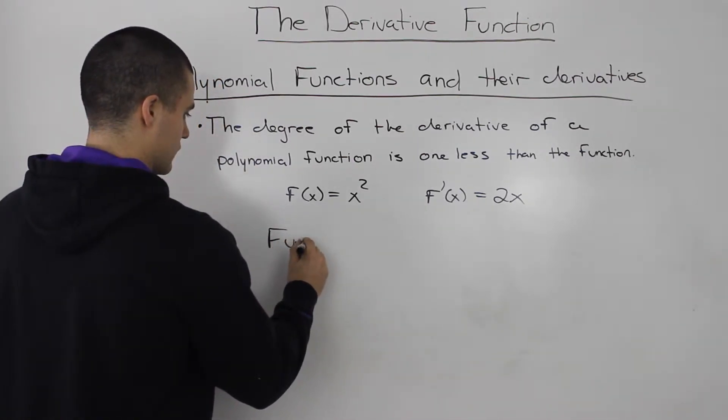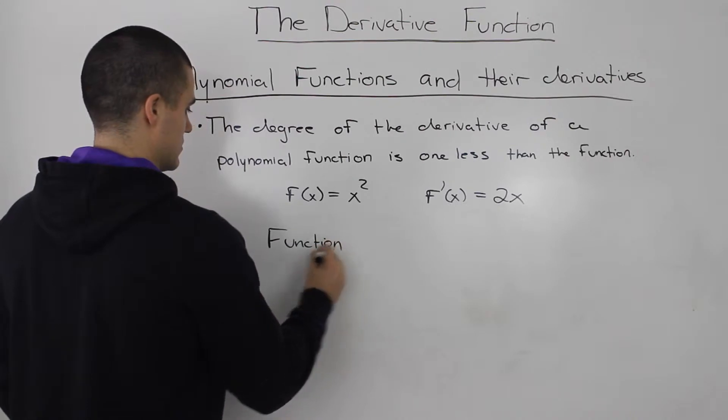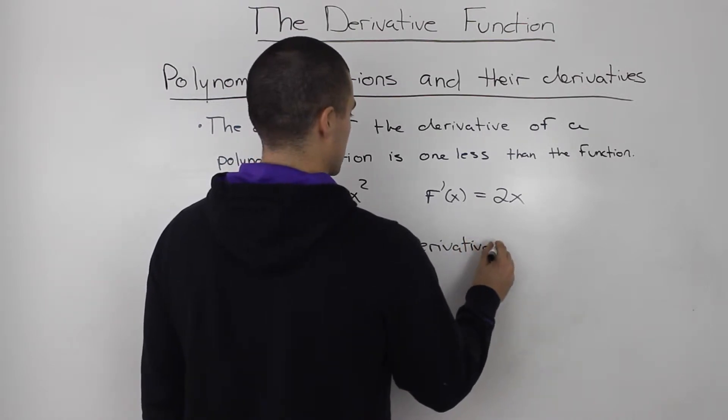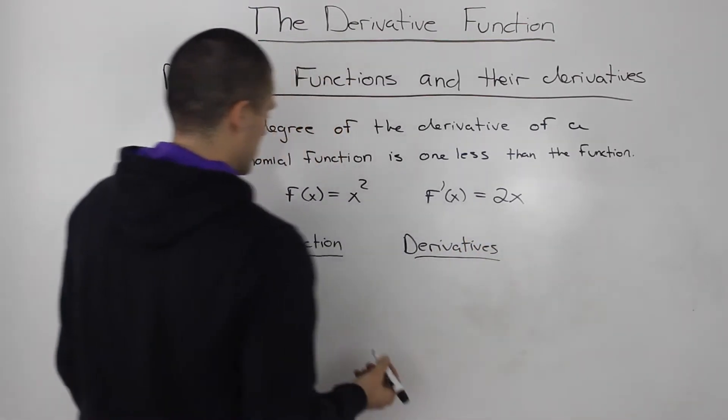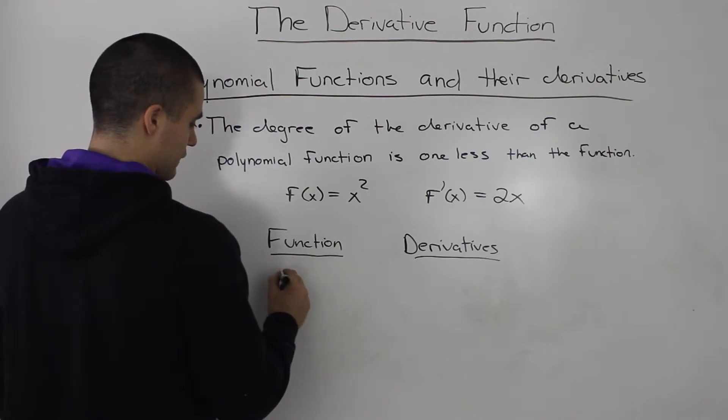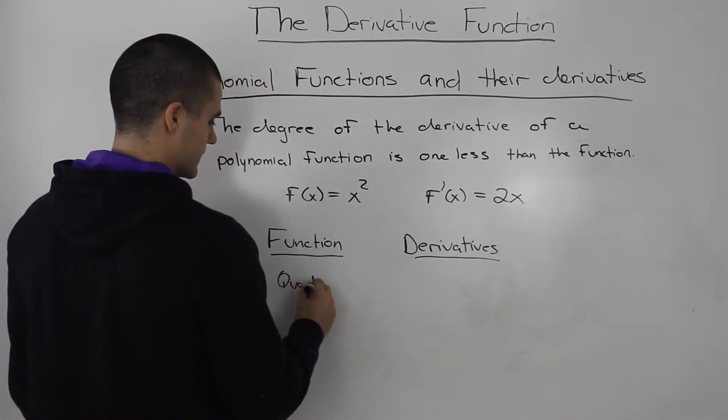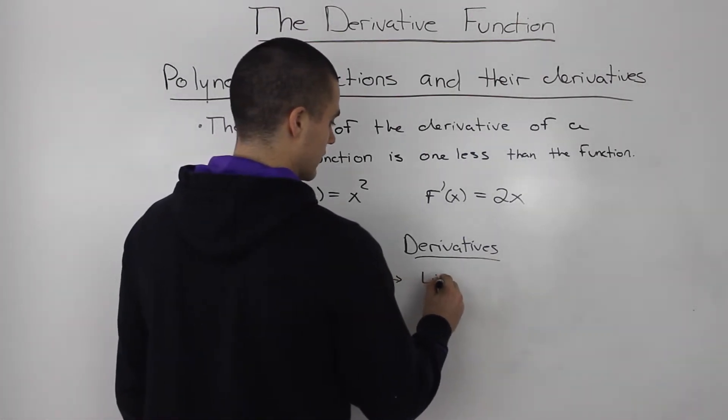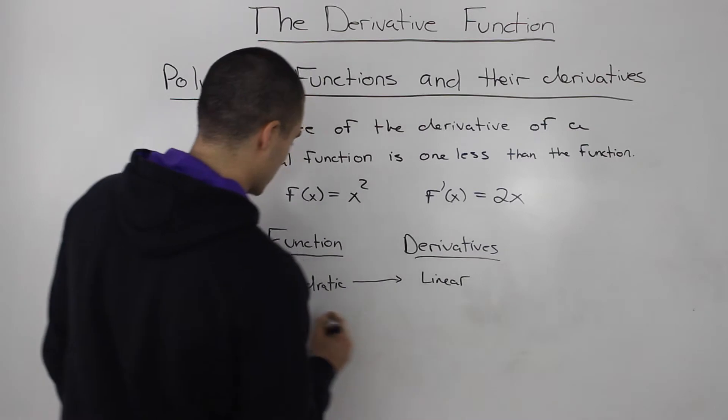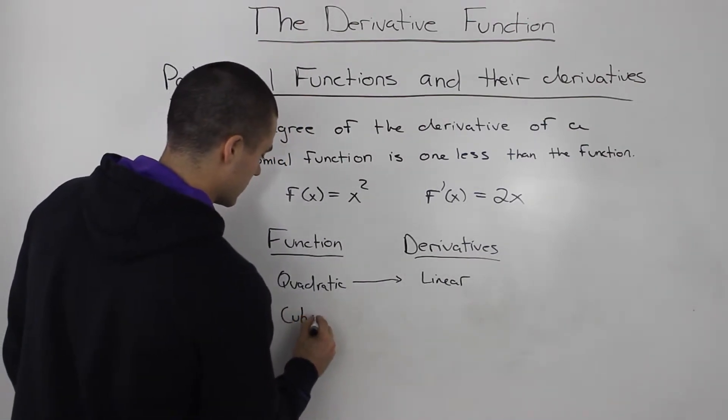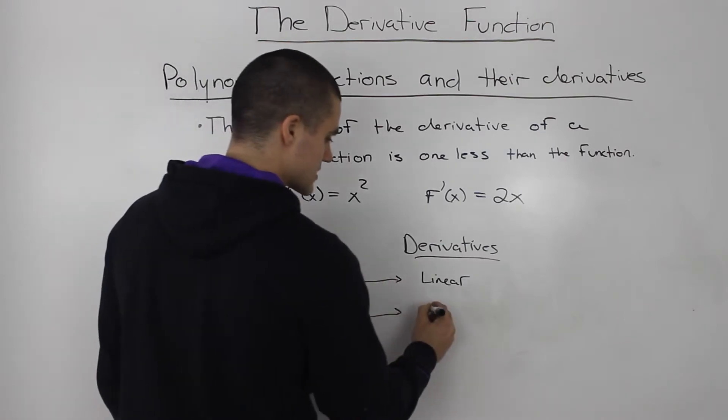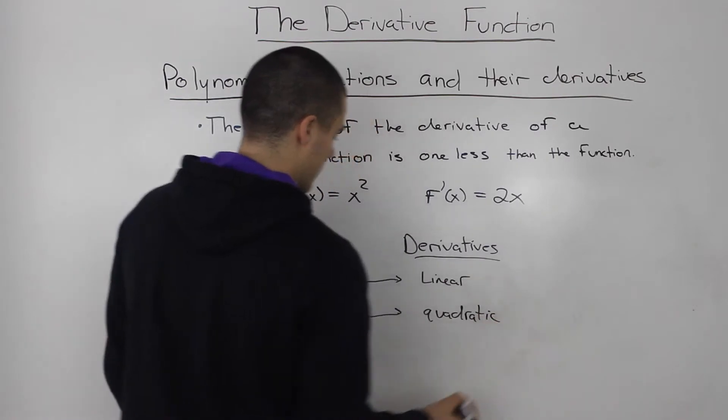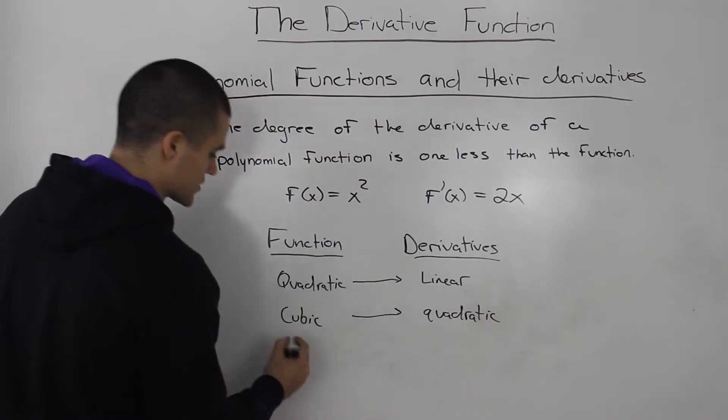So, for example, let's write out a couple of examples here. If the function is a quadratic, then its derivative is going to be linear. If a function is cubic, the derivative of a degree less is going to be quadratic.